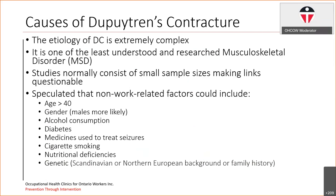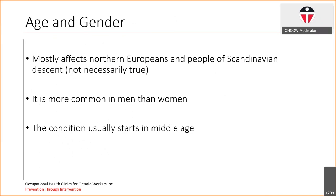With respect to causes of Dupuytren's Contracture, the etiology is extremely complex. This is one of the least understood or researched musculoskeletal disorders, as well as being based on flawed or outdated research. Many of the studies normally consist of small sample sizes, which makes the links that authors have made very questionable. Non-work-related risk factors can include age being over 40, gender, alcohol consumption, diabetes, certain medicines, cigarette smoking, nutritional deficiencies, and genetic background.